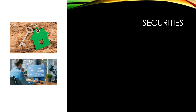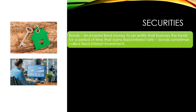Securities are financial instruments that hold value and can be traded between parties. One example of a security investment is bonds. Bonds is where an investor lends money to an entity that borrows the funds for a period of time at a fixed interest rate. That is why bonds are sometimes called fixed interest investments. Bonds can be corporate bonds or government bonds. A corporate bond is a type of debt security issued by a firm or corporation and sold to investors.